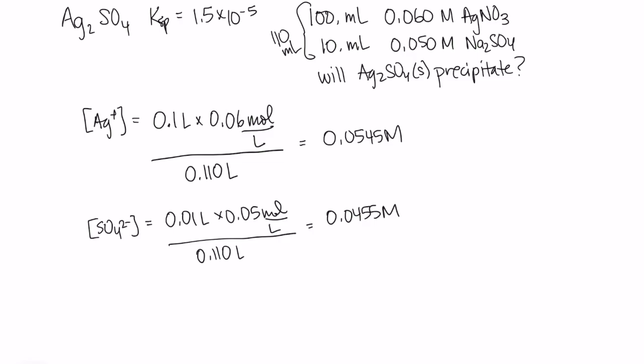So now I want to know what is the value of Q. So my reaction for the Ksp will be my silver sulfate dissolving and dissociating. We're going to get two silver ions and one sulfate ion. So my Q expression will be my concentration of silver squared times my concentration of sulfate.